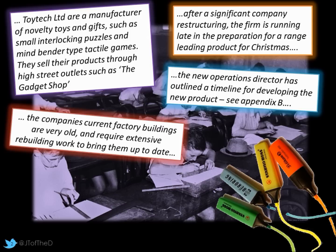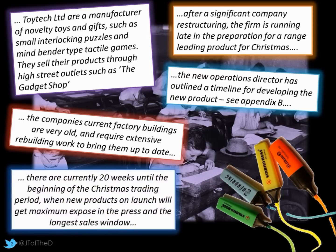A couple of other bits of information might be relevant when thinking about critical path. The company's current factory buildings are very old and need to be updated - they may have to do lots of work including rewiring and re-plumbing to bring those up to speed. They're currently 20 weeks away from the Christmas trading period, which is when they want to launch. So in terms of critical path, 20 weeks is our window.